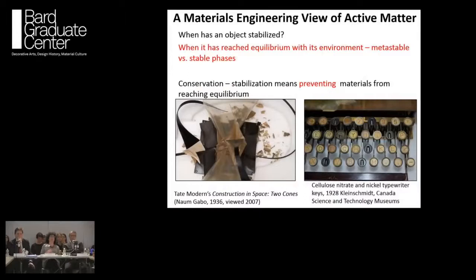In conservation, we talk about stabilization as the prevention of materials from reaching equilibrium with their environment. When I look at the Naum Gabo we looked at last night from a materials perspective, it's really coming to equilibrium with its environment. Early plastics have not served us well, whether it's cellulose nitrate on the right or cellulose acetate on the left.